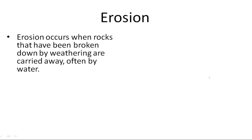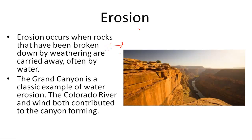Erosion is when the rocks that have been broken down by weathering — so all those tiny pieces — are carried away, often by water. The Grand Canyon is a classic example of water erosion.